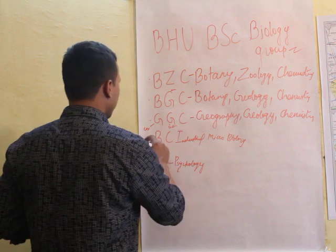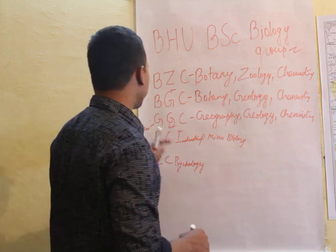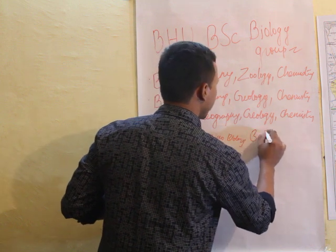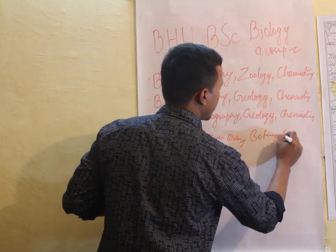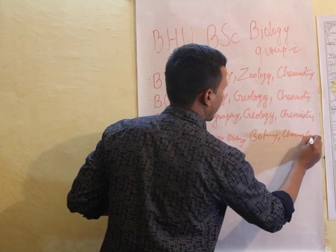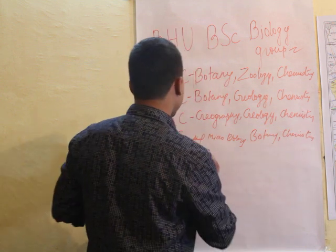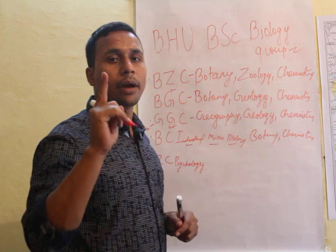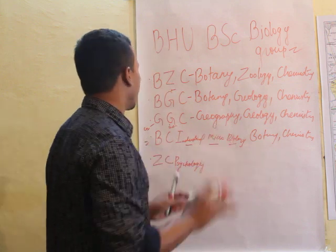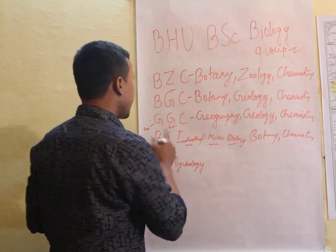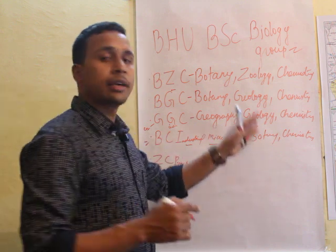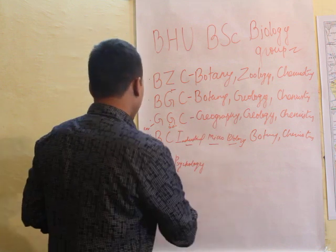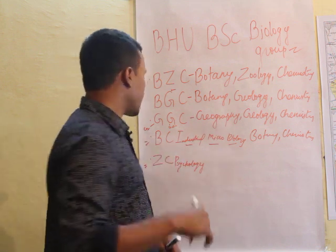The fourth subject combination is BCI — that is Botany, Chemistry, and Industrial Microbiology. This is also a very good and unique combination. So BCI stands for Botany, Chemistry, and Industrial Microbiology.